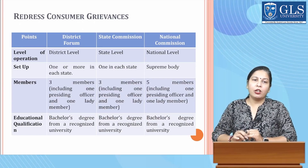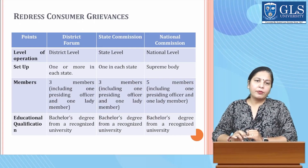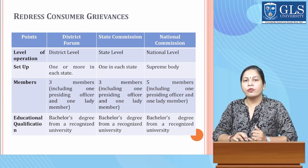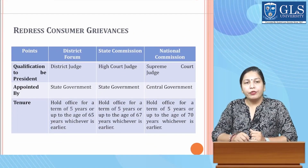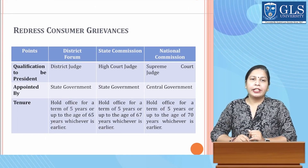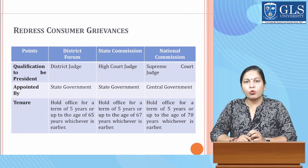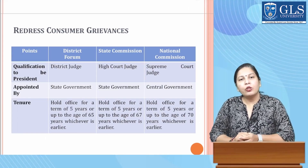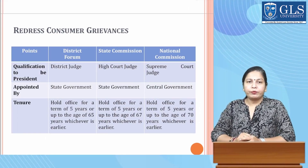The educational qualification required is a bachelor's degree from a recognized university for all three levels. For the president's position: district forum requires experience as a district judge, state commission requires experience as a high court judge, and national commission requires experience as a Supreme Court judge. All three positions are appointed by the state government and central government.